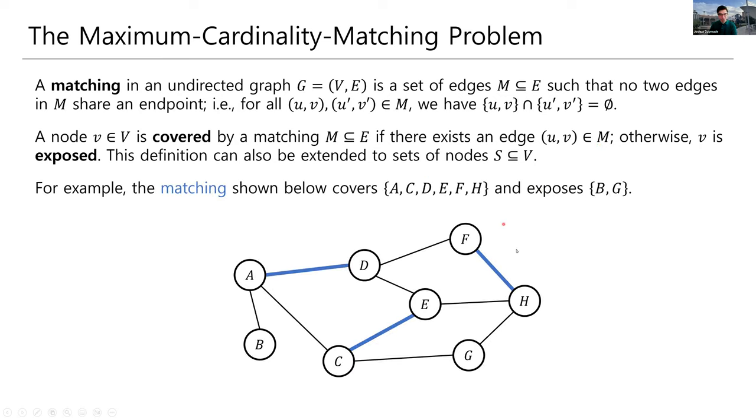So here's an example. We have this graph with eight nodes. The blue edges form a matching, because no two of these blue edges share an endpoint. And this blue matching covers A, D, C, E, F, and H, because all of those are endpoints. And it exposes B and G because there are no edges of the matching that have B or G as endpoints.